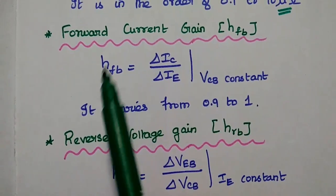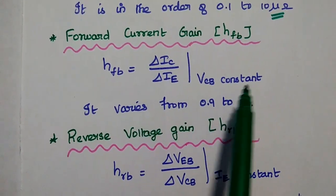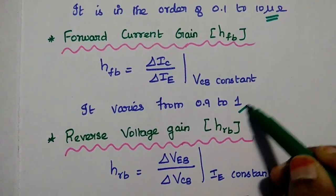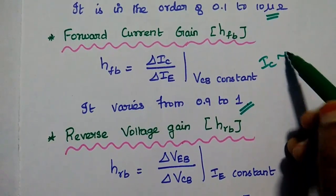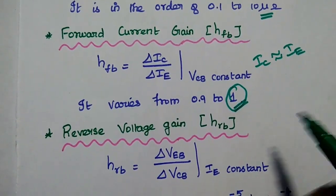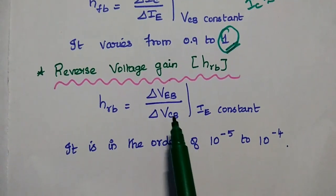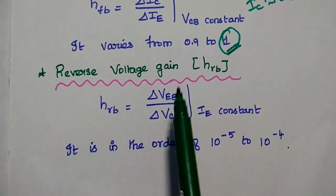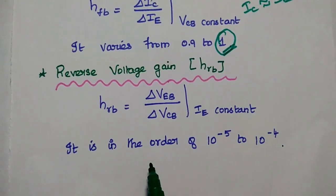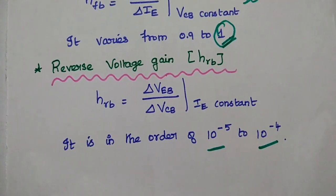Forward current gain is the ratio of output current to input current with output voltage constant. For common base configuration, it is almost equal to 1, since IC is approximately equal to IE. Reverse voltage gain considers voltages only — it is the ratio of input voltage to output voltage with input current constant. Its value is in the order of 10⁻⁵ to 10⁻⁴, which is very low.